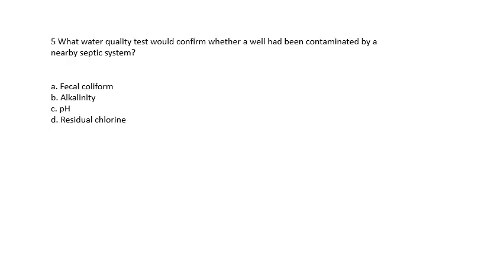Question 5: What water quality test would confirm whether a well has been contaminated by a nearby septic system? Fecal coliform, alkalinity, pH, or residual chlorine. The answer is fecal coliform.